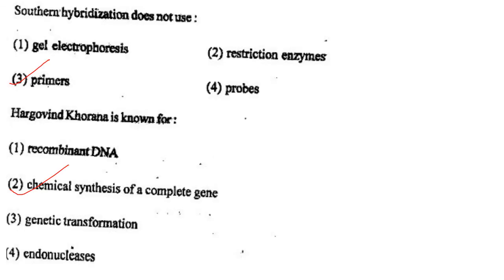Next one: Southern hybridization does not use option 1, gel electrophoresis; option 2, restriction enzymes; option 3, primers; option 4, probes. Answer is option 3: primers.